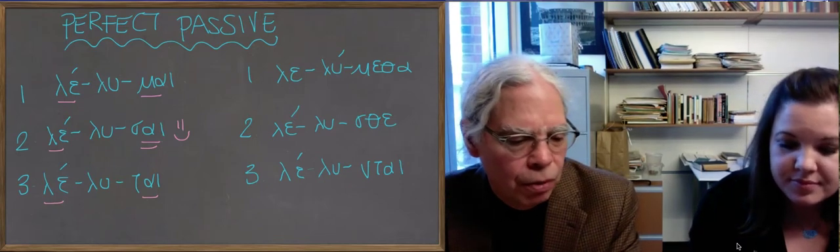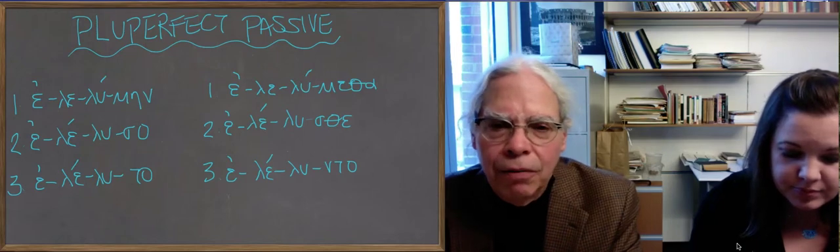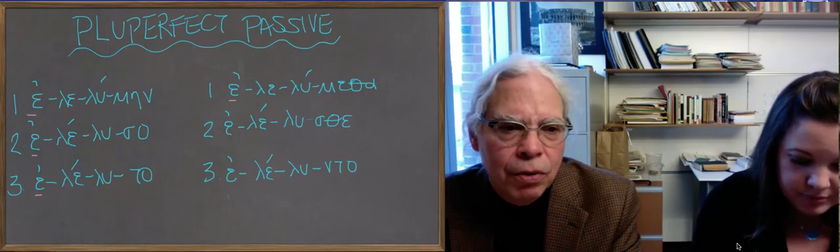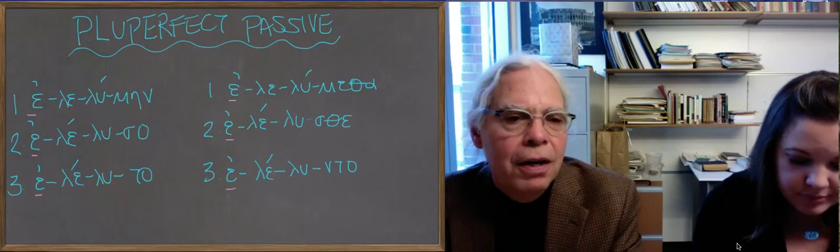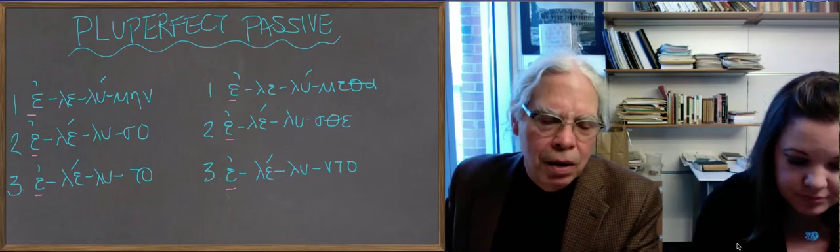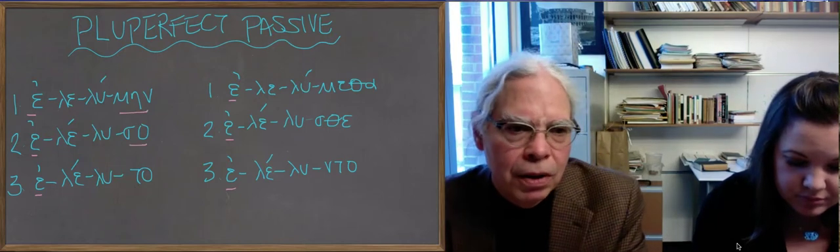If you look now at the screen with the pluperfect, what do we have? We've augmented it. So you have the syllabic augment in front of the reduplicated thing, e, and then you tack on without any thematic vowel, once again, the secondary passive endings.